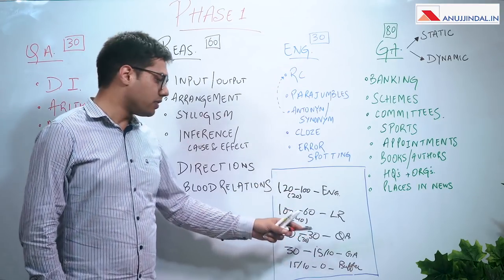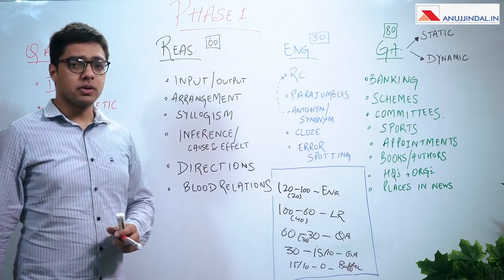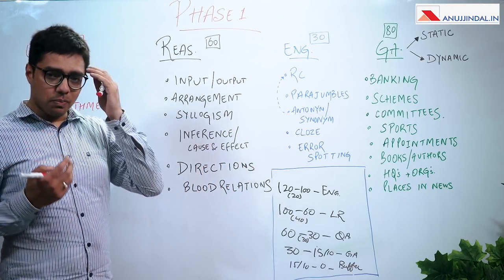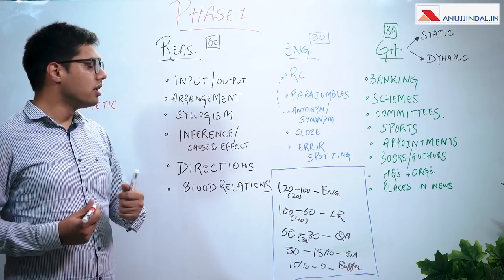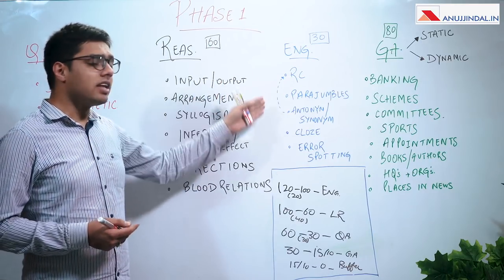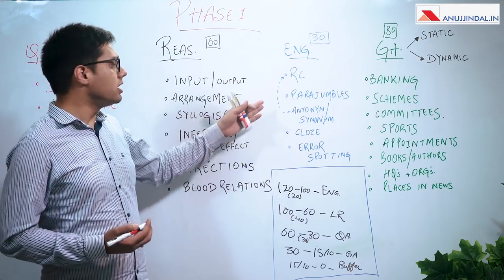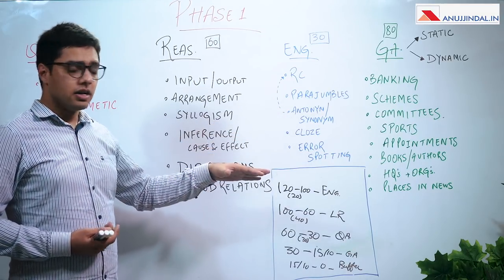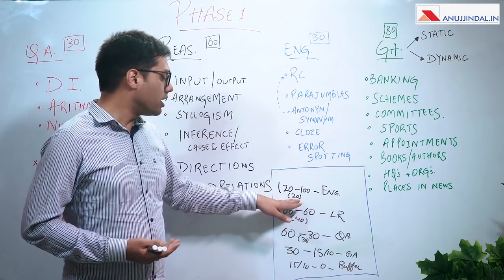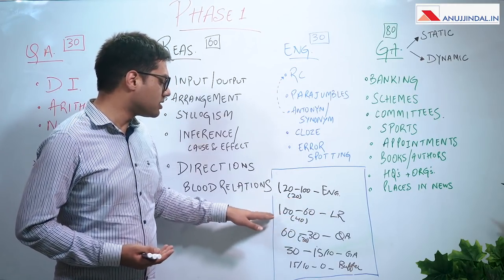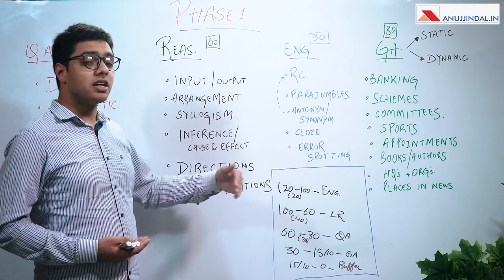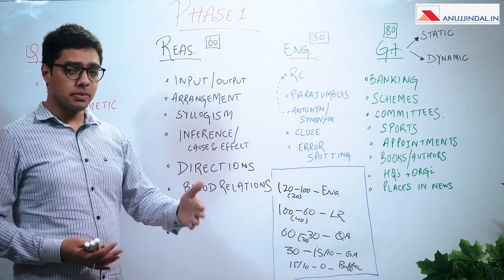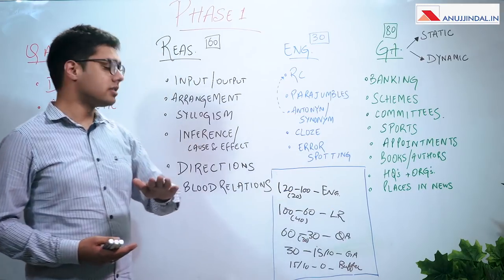Talking about the sequencing: I do English first because a fresh brain just entering an examination hall has a much higher ability to comprehend an RC or do para jumbles. In English, you don't really have to do any calculations. The efficiency — both in number of questions attempted and questions answered correctly — is very high if you do it right at the beginning. That is why I always keep English as my first section.